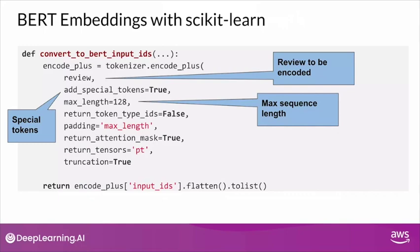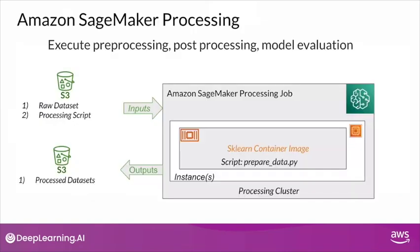Once you determine all the necessary parameters, generating the embeddings is really very straightforward — you simply run the encode_plus method. However, the real challenge comes when you have to generate these embeddings at scale. This is exactly the challenge that you will tackle in this week's lab: performing feature engineering at scale.